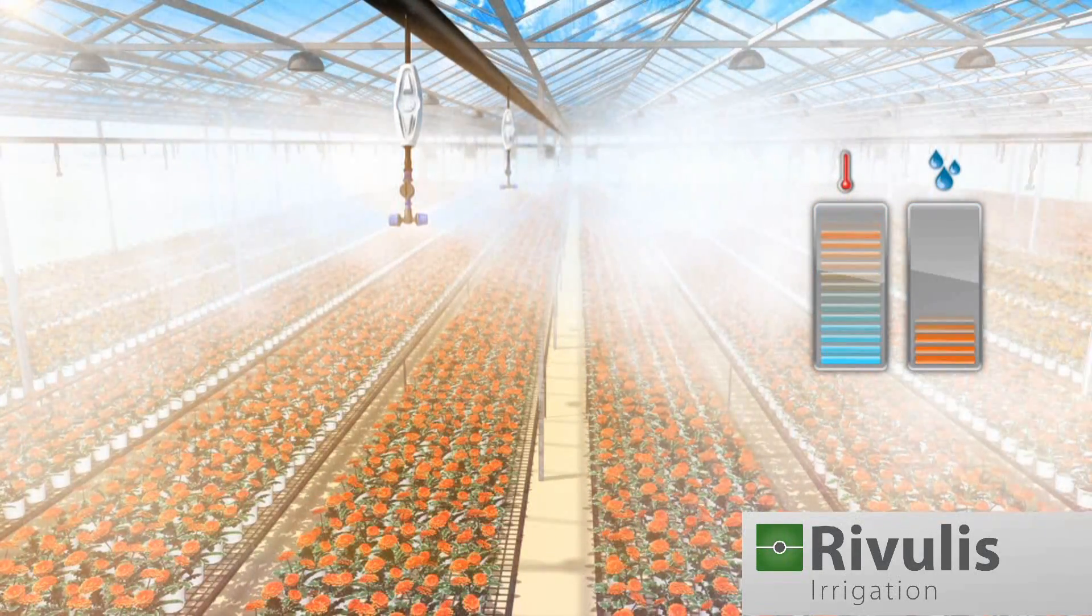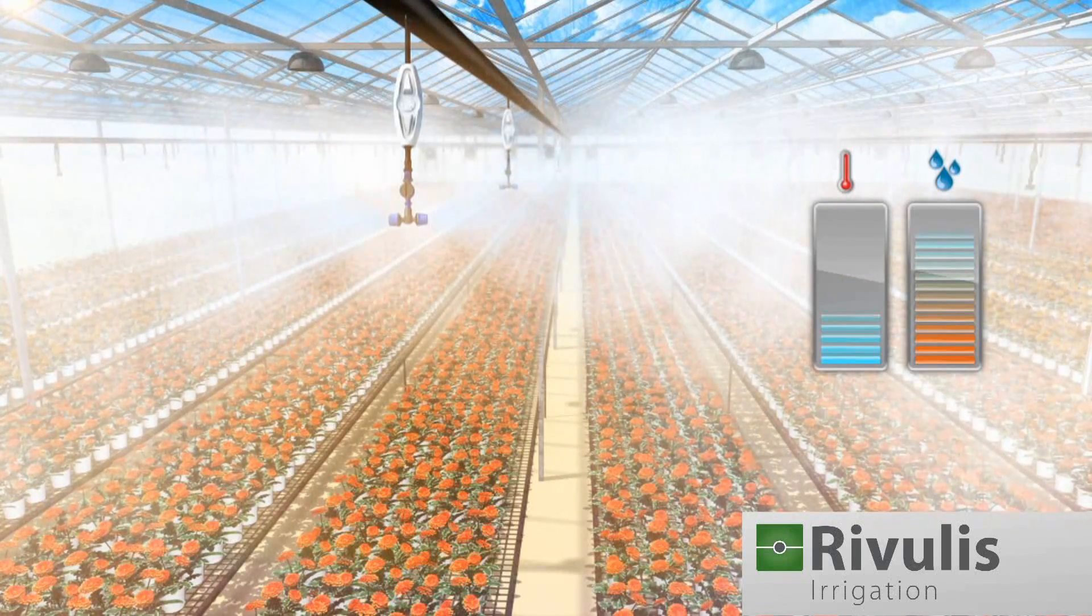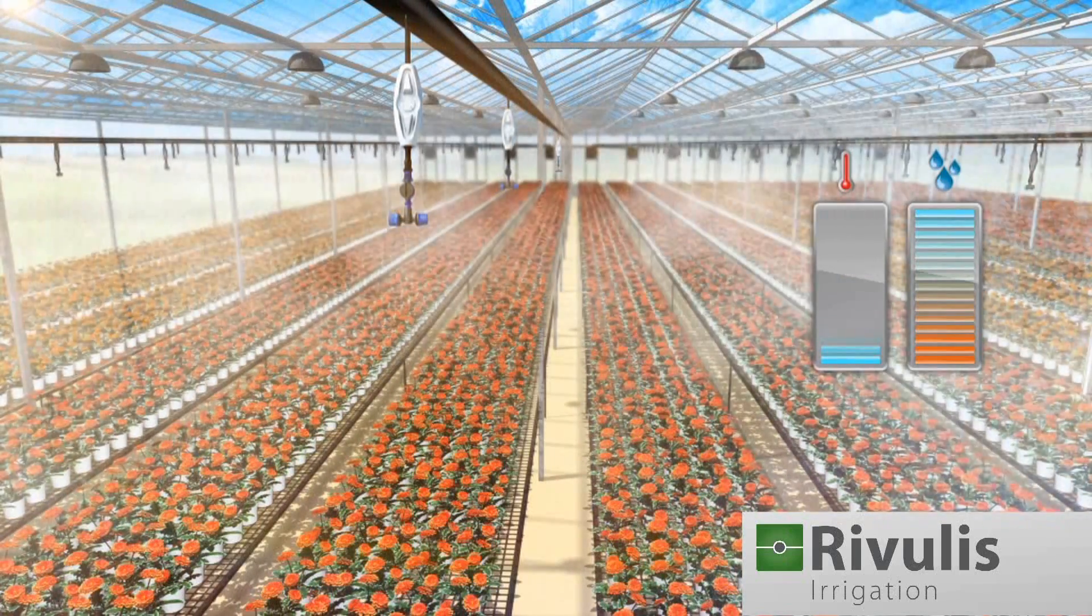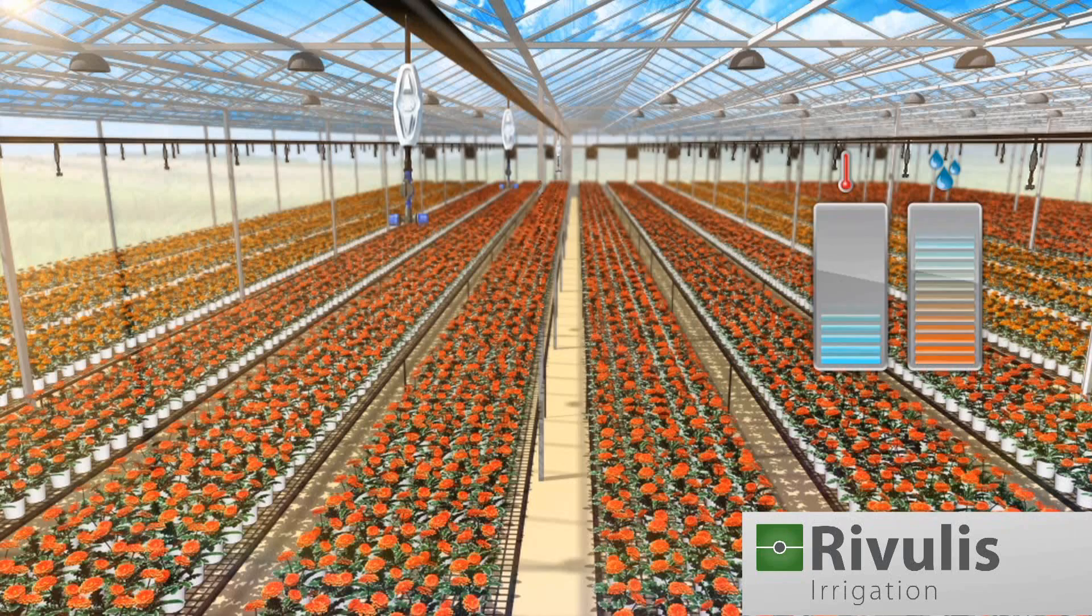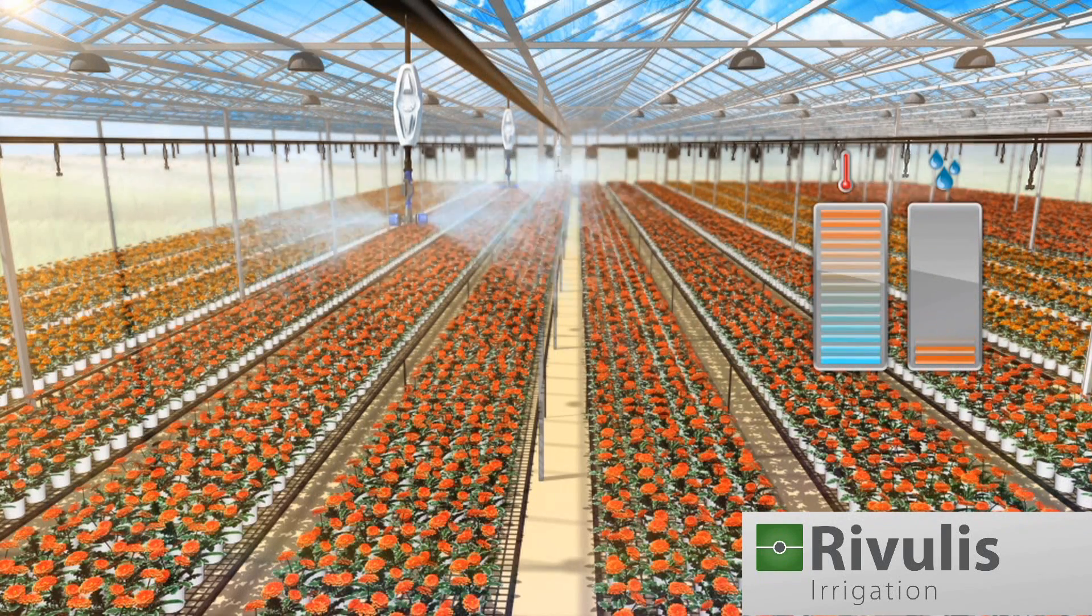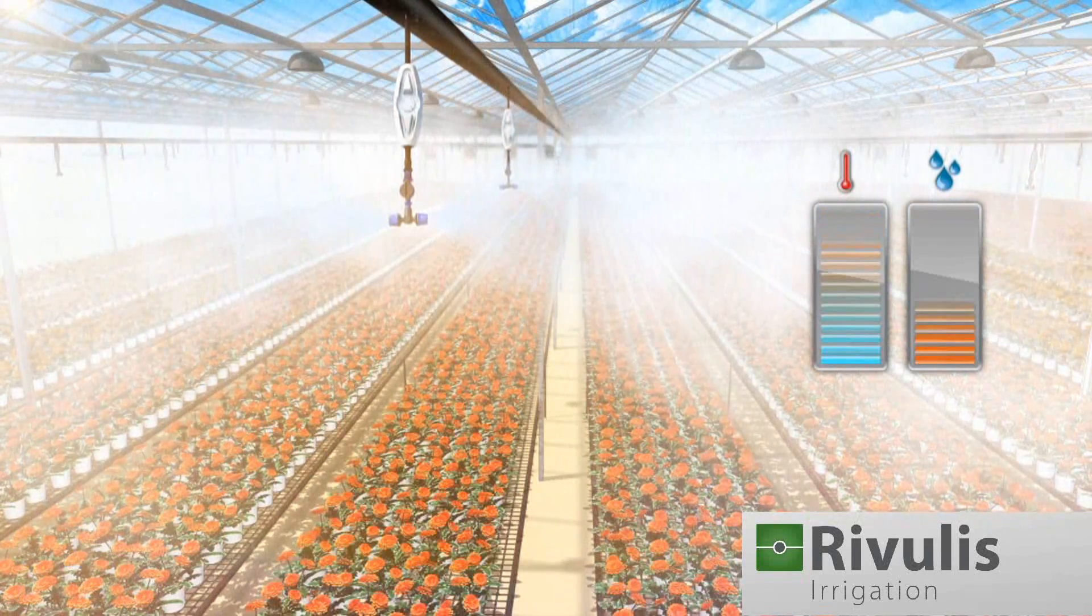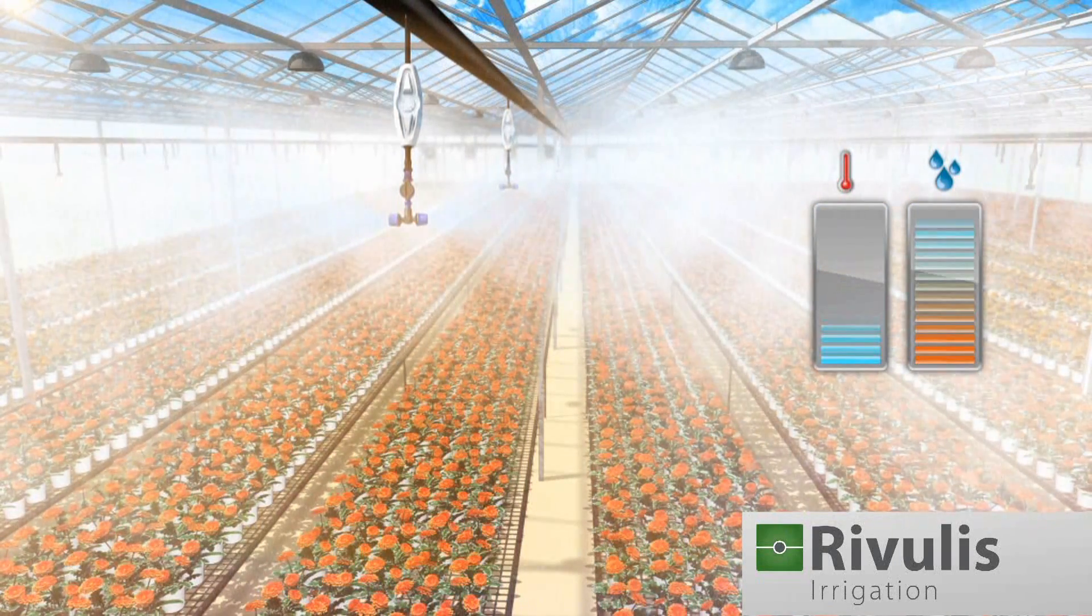The fogger's fine water droplets and low flow rate provide effective cooling for the plants. The foggers help decrease the temperature and increase the humidity in the greenhouse.